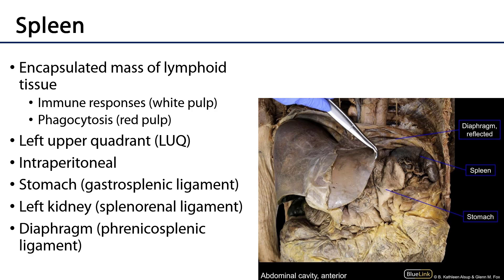For instance, between the stomach and the spleen there is the gastrosplenic ligament, part of the greater omentum. Connecting the spleen to the left kidney, which cannot be seen here but will be deep there, is the splenorenal ligament. And connecting the spleen to the diaphragm, or the left hemidiaphragm, is the phrenicosplenic ligament.